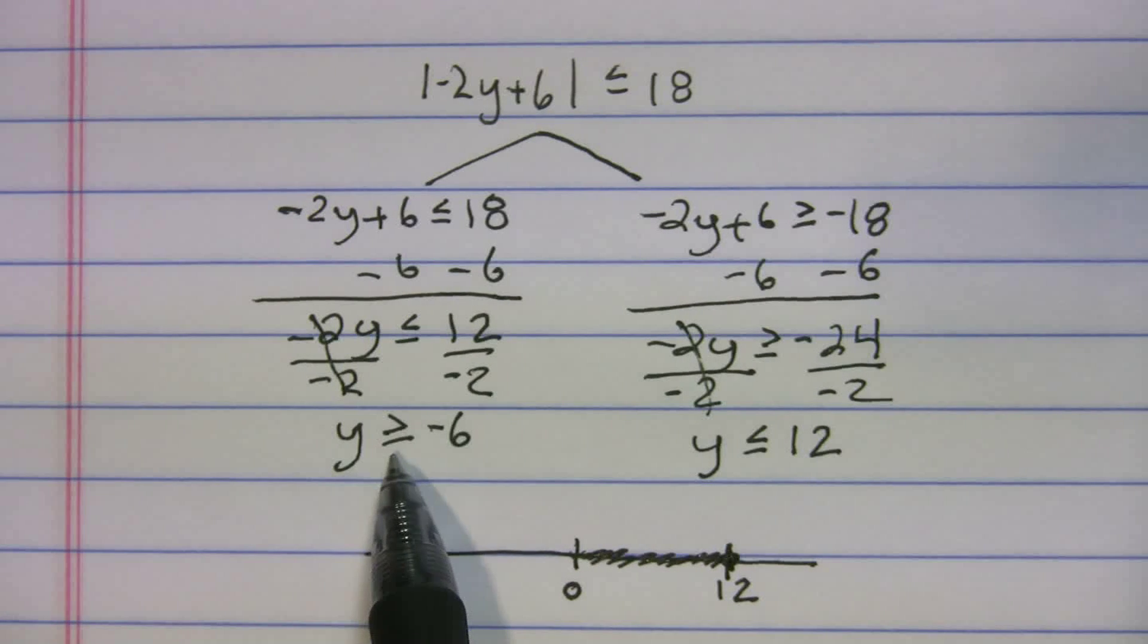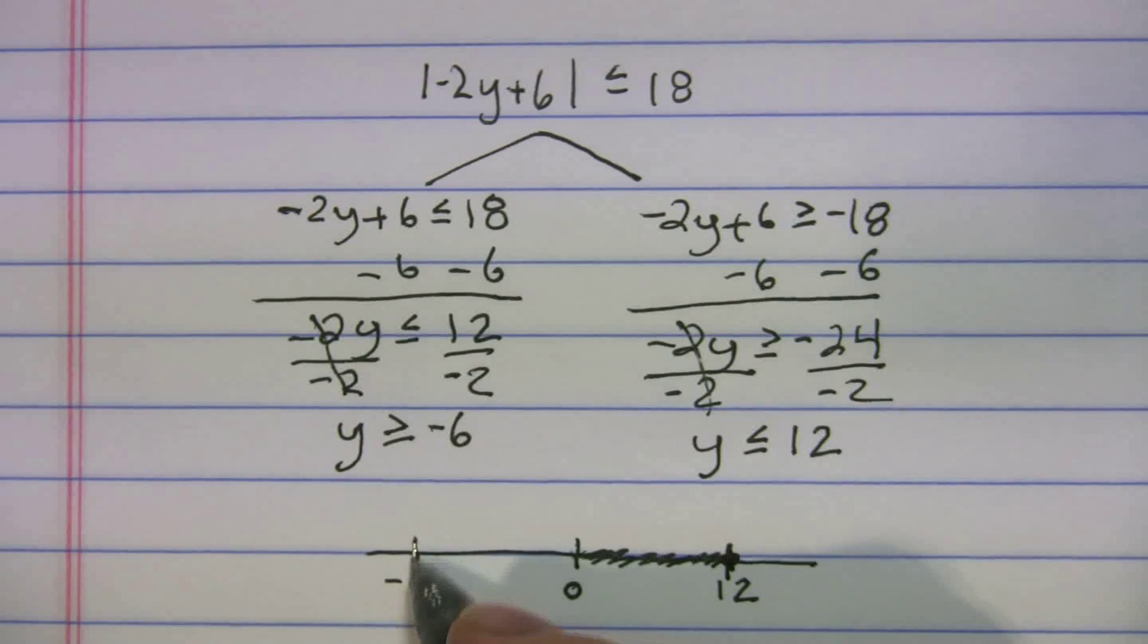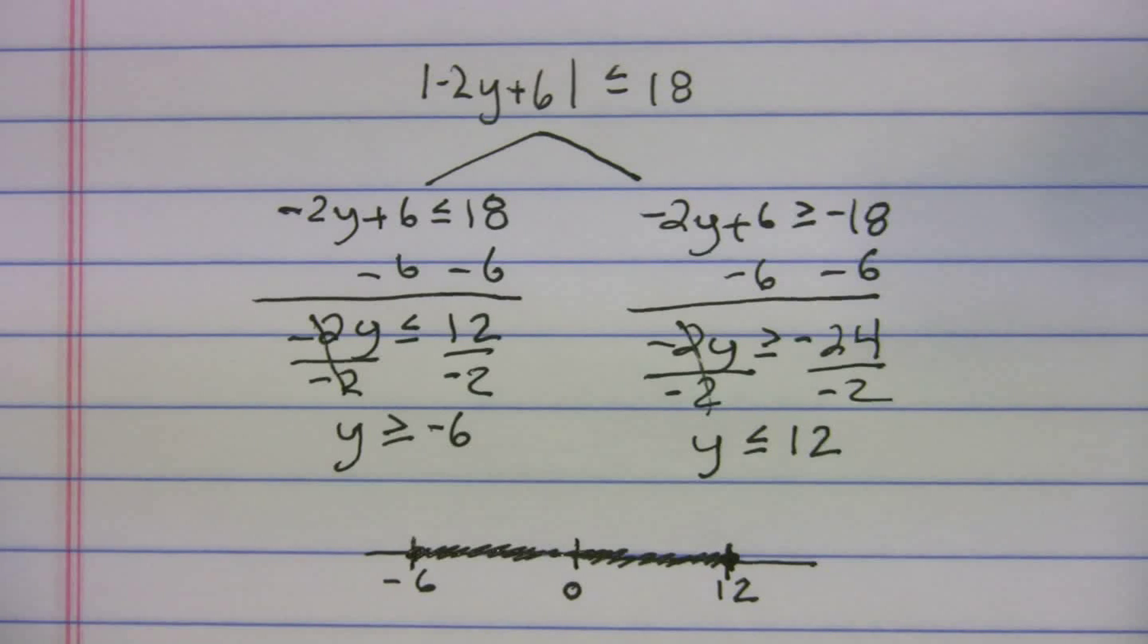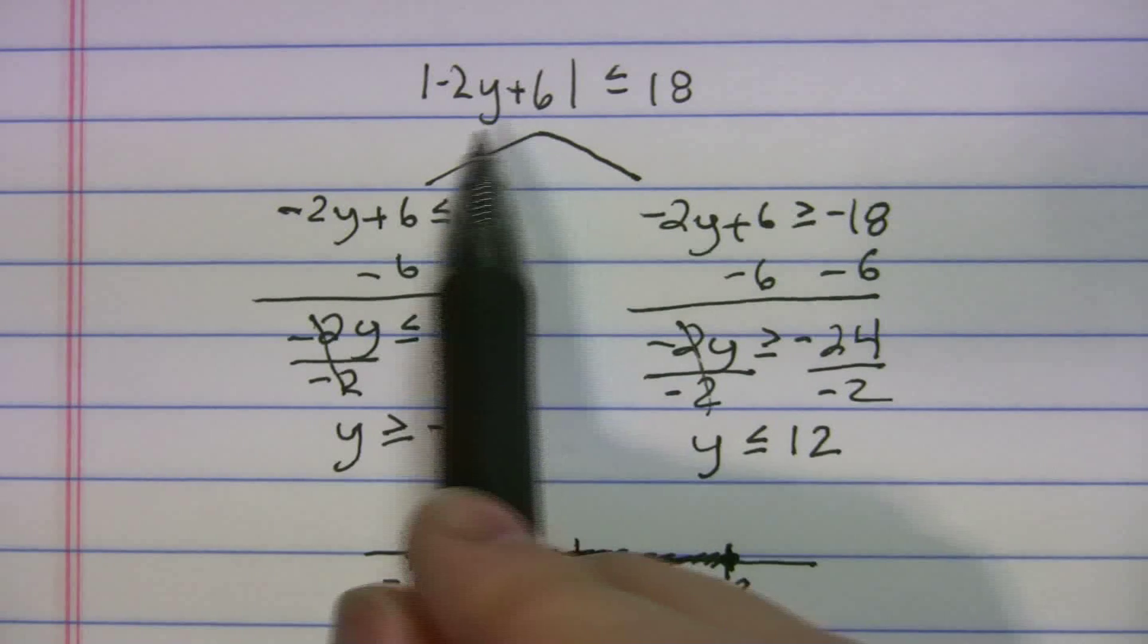This one says y is greater than or equal to -6. So greater than, we go to the right. And this is going to be a filled in dot as well. So this is where your solution set is. Anything in here should satisfy this inequality.